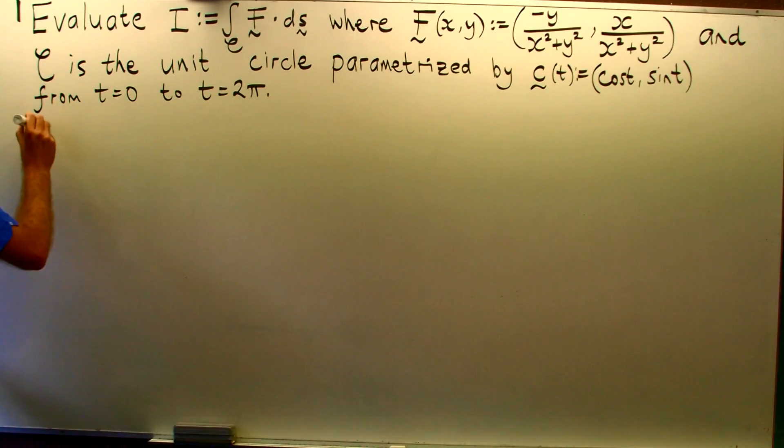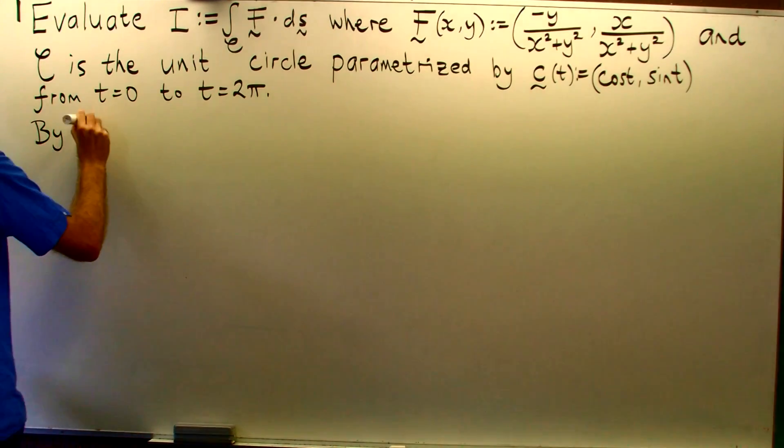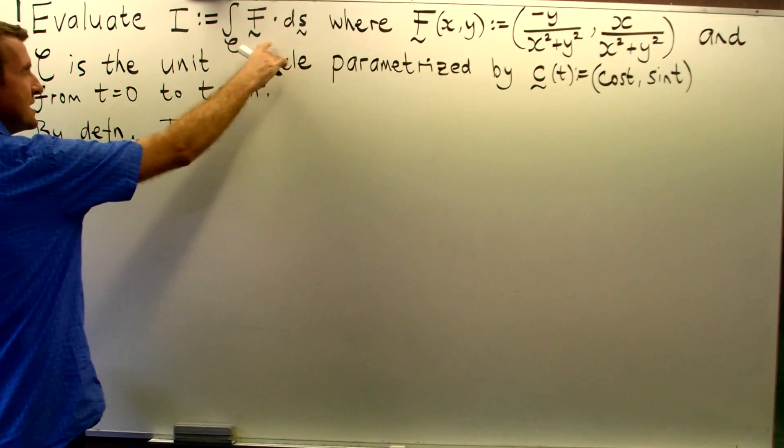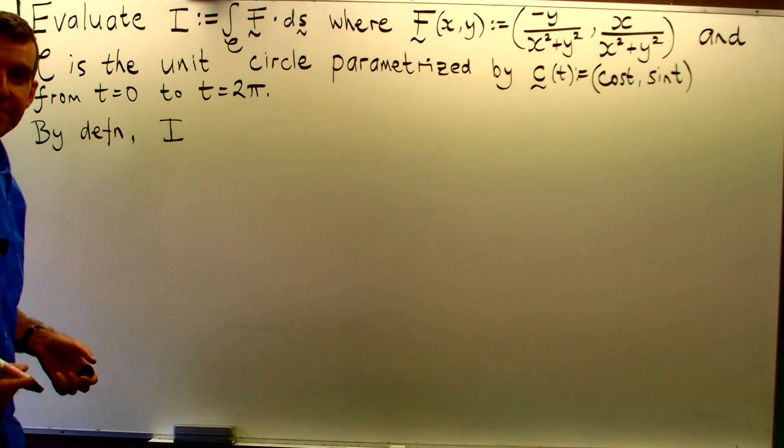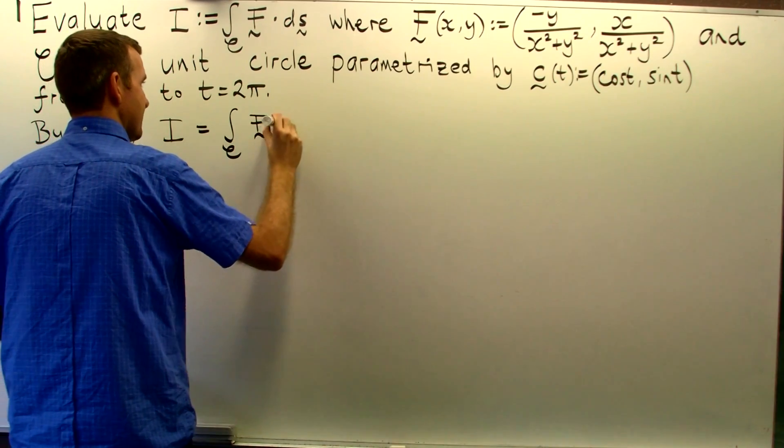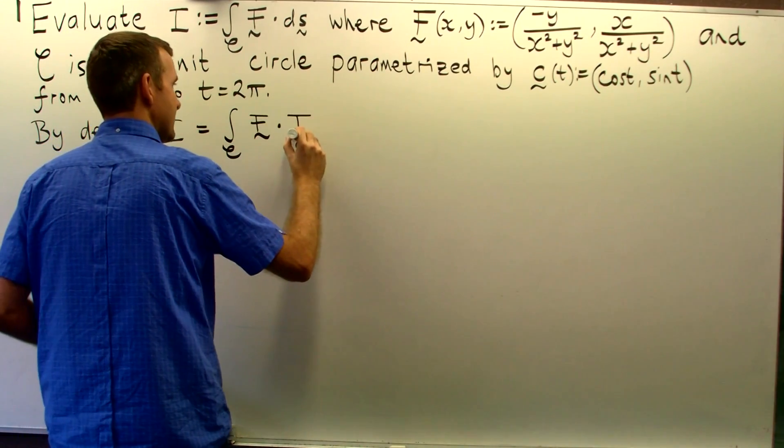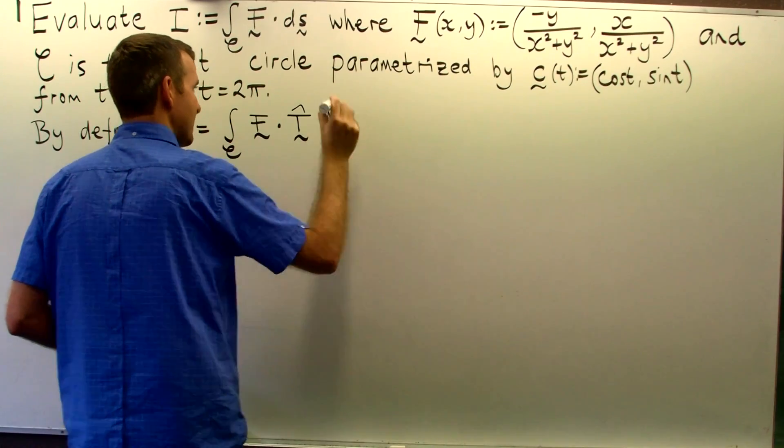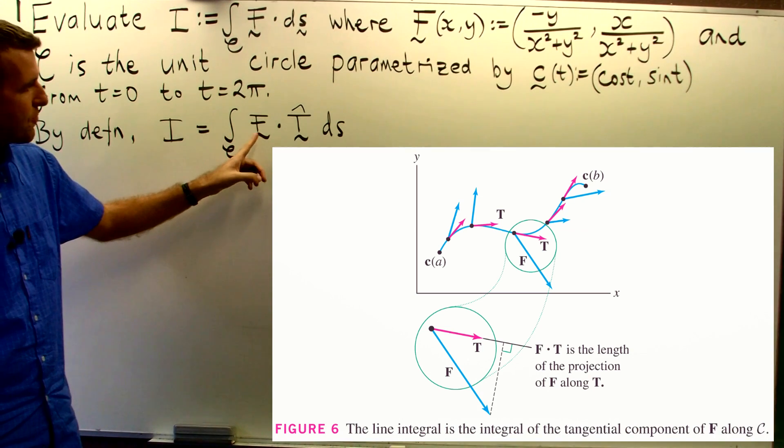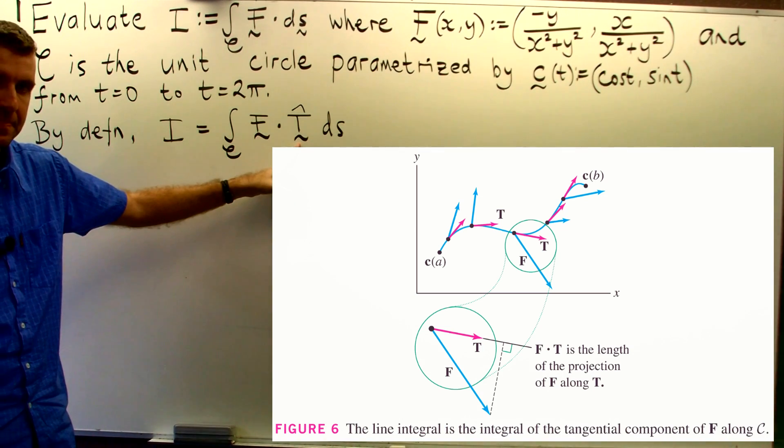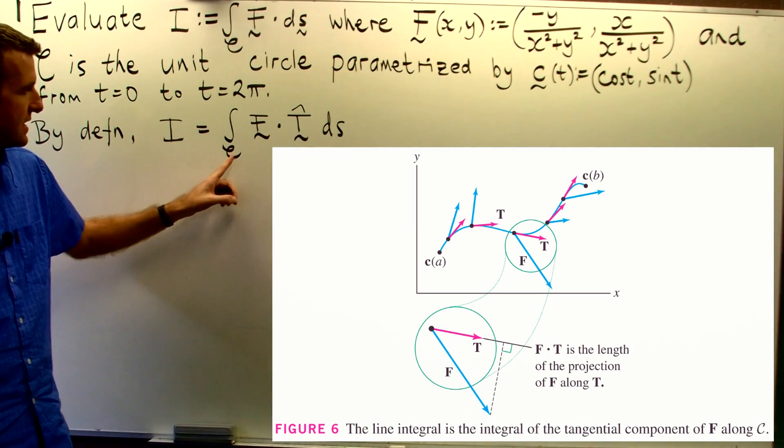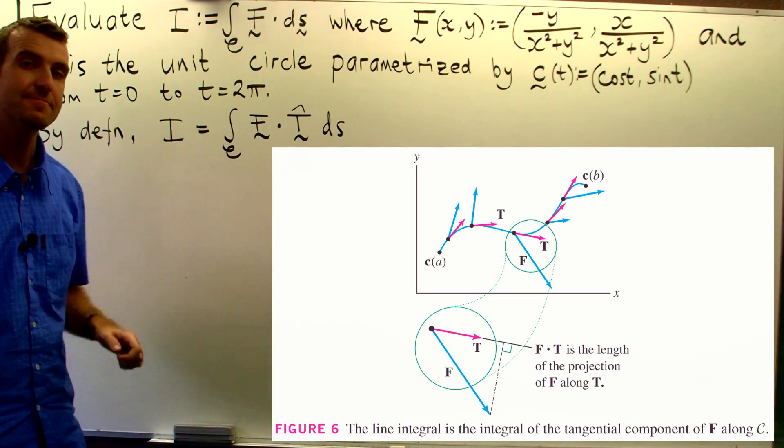Well, essentially what we do is realize that this is just a so-called path integral. It's just the dot product of f with the unit tangent vector in the positive direction of motion integrated around the curve c with respect to arc length.